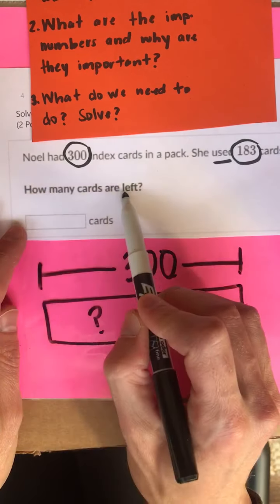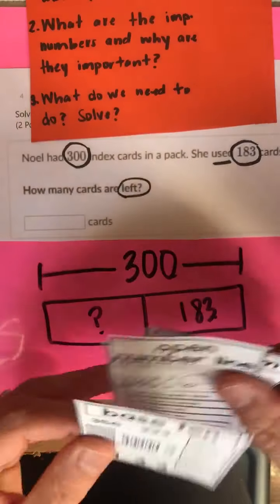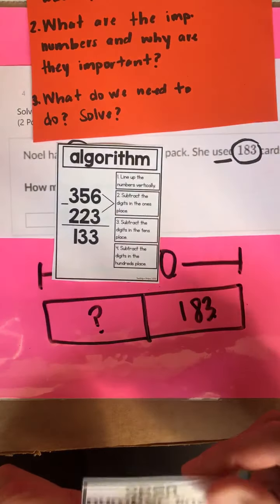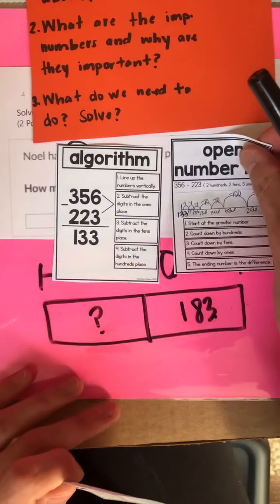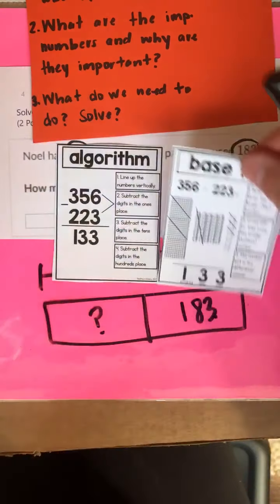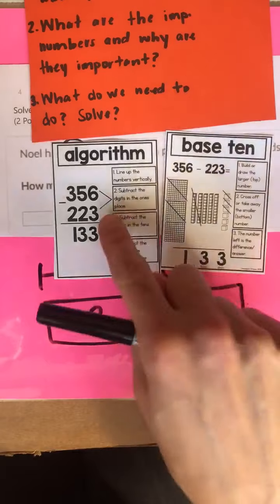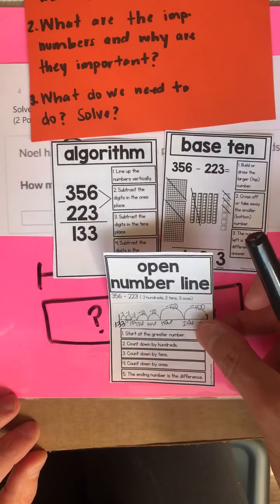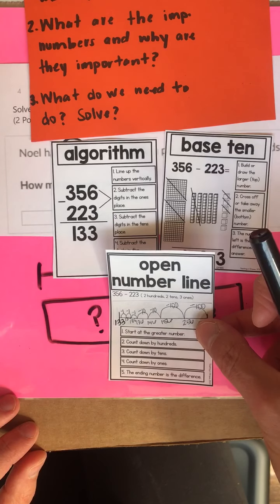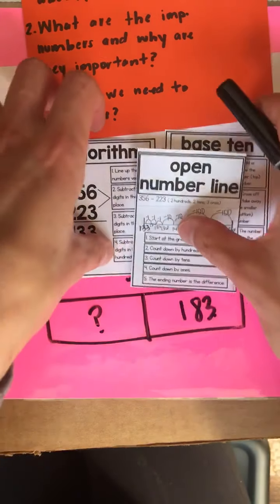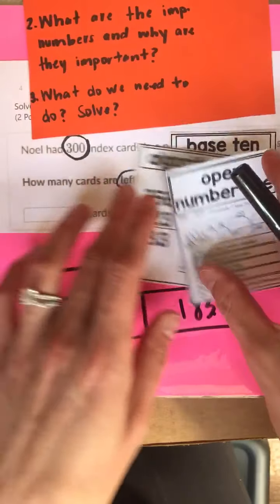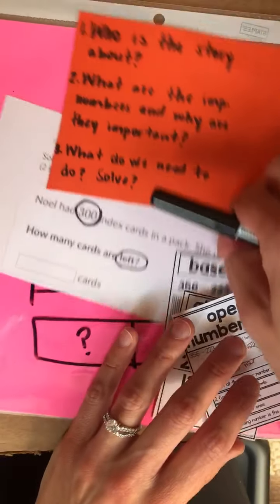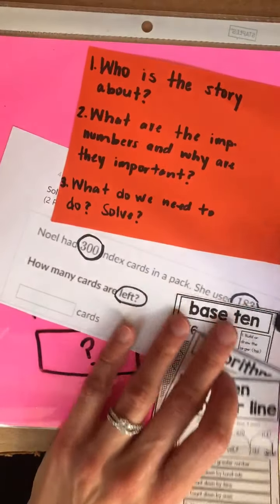So again friends, choose the strategy you want to use: standard algorithm, place value model with the standard algorithm, or an open number line. Pause the video, solve number four, and press play when you're ready to take a look at number five.